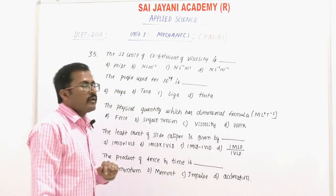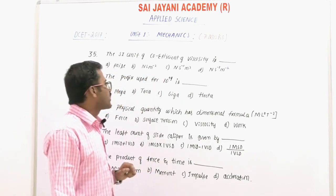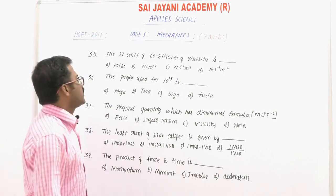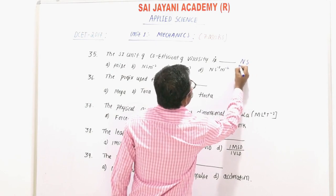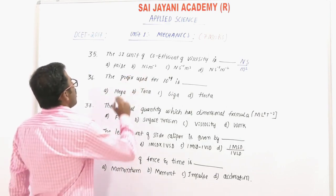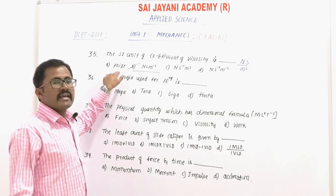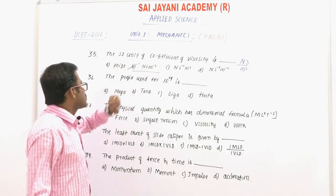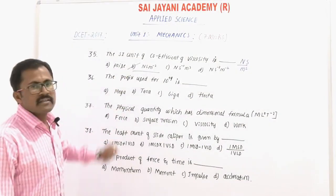Question number 35: the SI unit of coefficient of viscosity is — option B: Newton second per meter square. The SI unit of coefficient of viscosity (dynamic viscosity) is Newton second per meter square. Option A, poise, is a unit in the CGS system, not the SI system. So option B is the right answer.